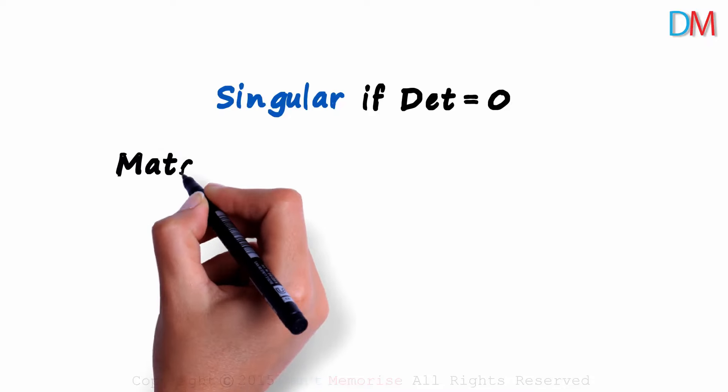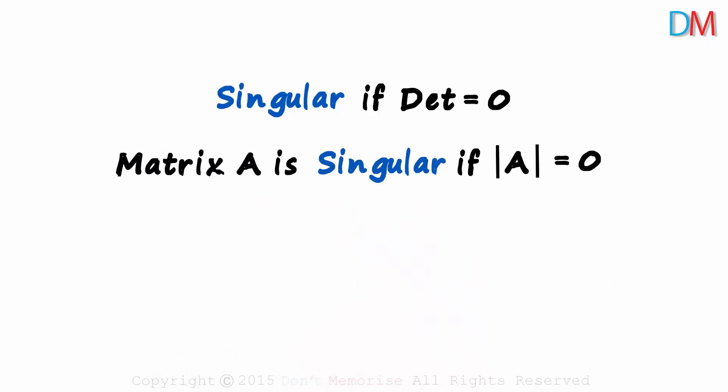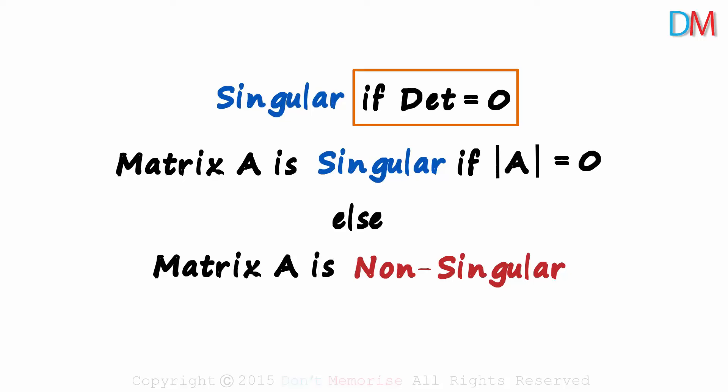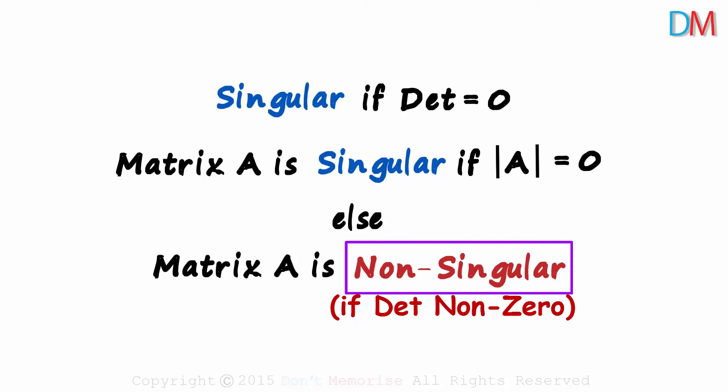We say that matrix A is singular if the determinant of A is equal to zero. Else it will be non-singular. If the determinant is equal to zero, then singular and if the determinant is non-zero, then the matrix is non-singular.